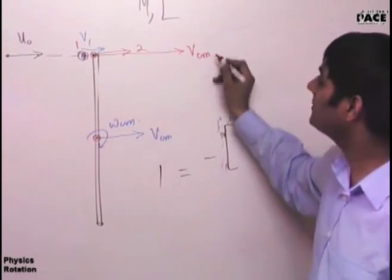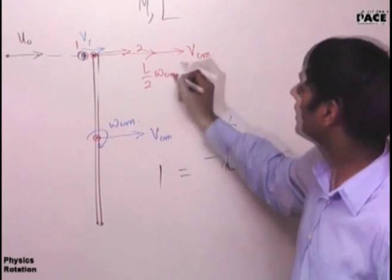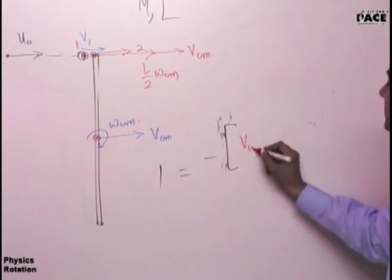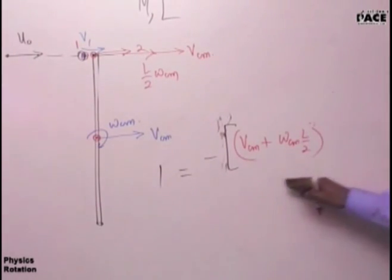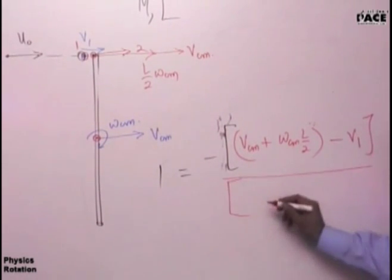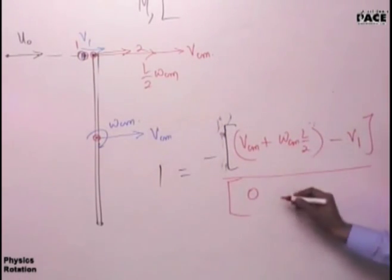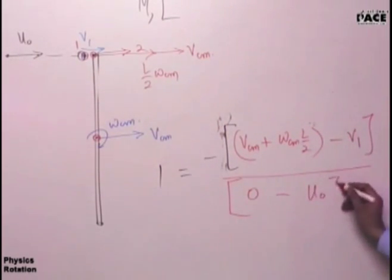So, the point of collision - what is its velocity after collision? By superimposition theorem, its velocity is Vcm due to translation, and due to rotation is L by 2 into omega cm. So net velocity is Vcm plus omega L by 2. This is V2 minus V1 upon U2. Initially this point's velocity, which is the rod's point, was at rest so zero, minus U1. This is the correct answer.